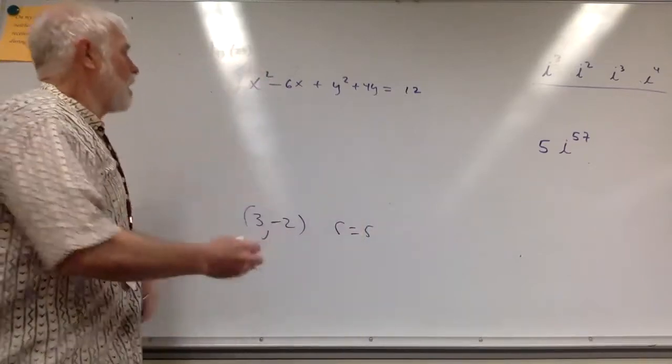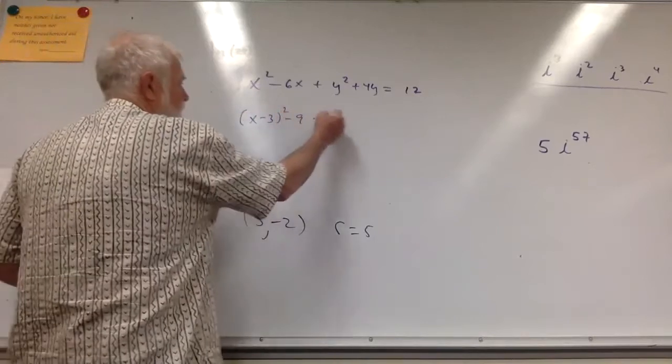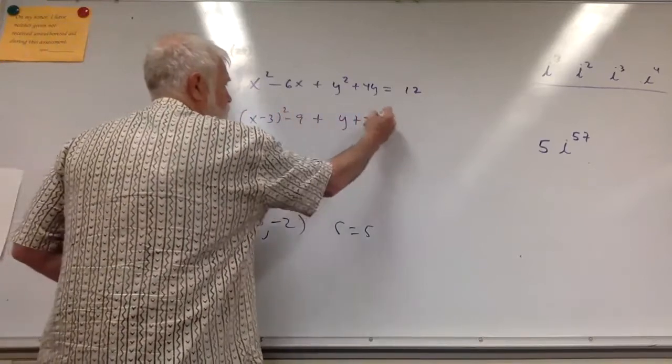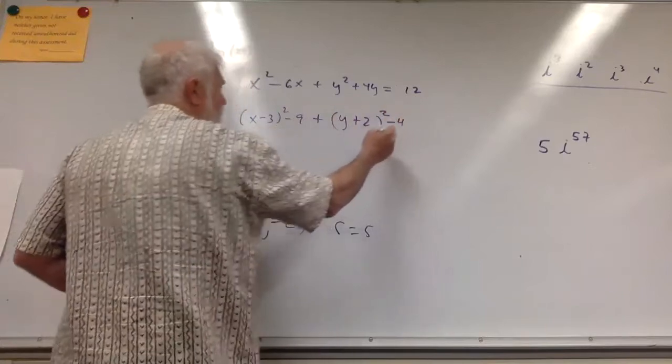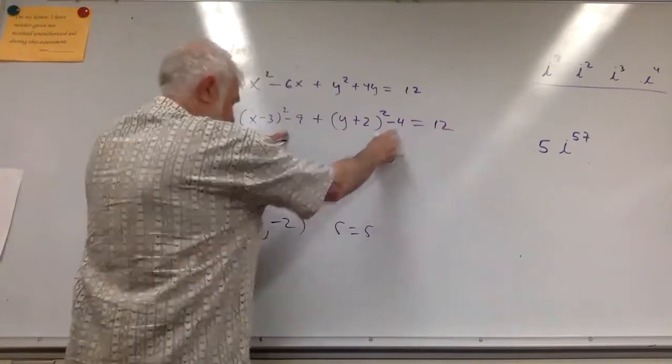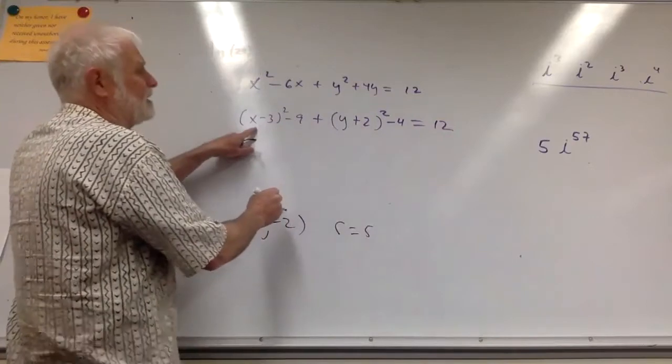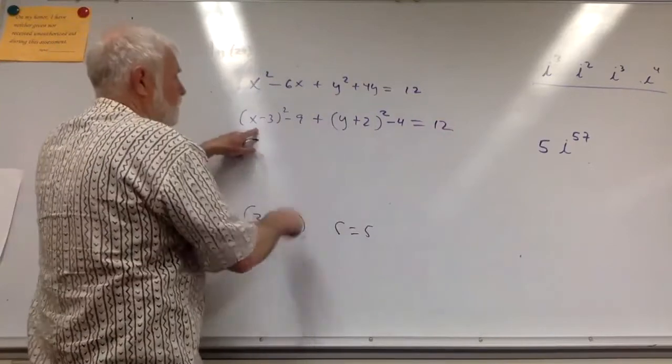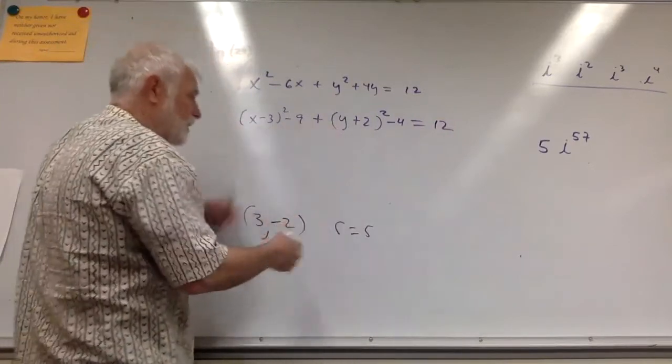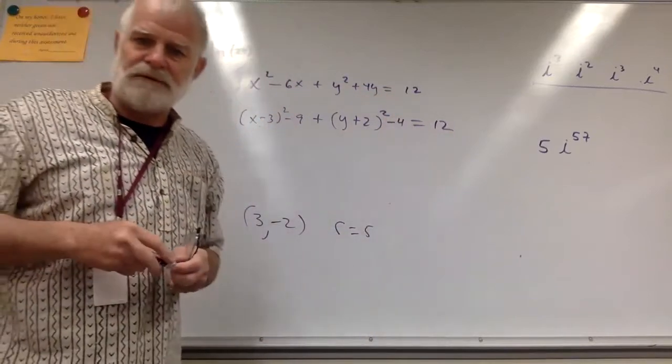Long way around: x - 3 squared - 9 + y + 2 squared - 4 = 12. So what are you going to do? You're going to add 9 and add 4. What are you going to do? You're going to look for what makes a zero: 3. What makes a zero: -2. Square root of 25 is 5. So you can start doing those in your head very quickly.